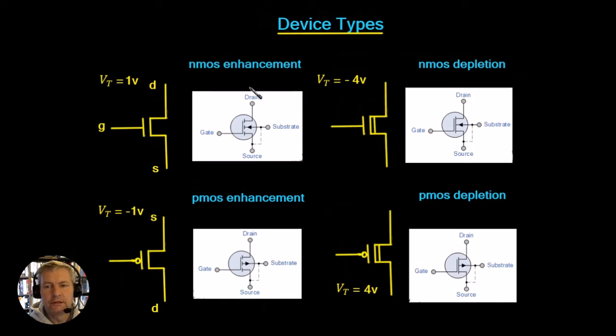We've got the schematics for the devices here: NMOS enhancement, NMOS depletion, PMOS enhancement, and PMOS depletion. These are the symbols you'll see for these devices. You'll notice they've got the fourth connection, which is the substrate connection, and you can see it's connected by this dotted line to the source in each of them.